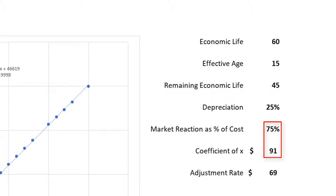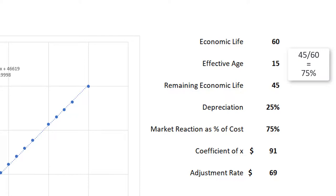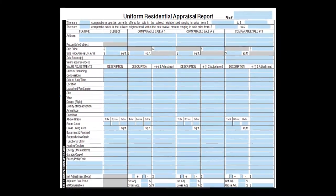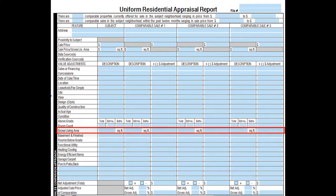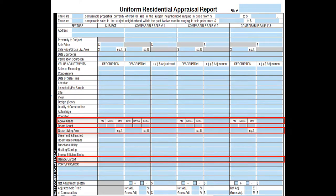For a final thought: in this last example, remaining economic life is 75% of total economic life. If you know the remaining economic life — if you have extracted it from the market in the cost approach — then you know the percentage of cost the market is currently willing to pay. The contributory value of the improvements is 75% of their cost new. This works in the grid because the sales comparison approach is all about the contributory value of one more square foot, one more bath, one more garage stall, and so on.